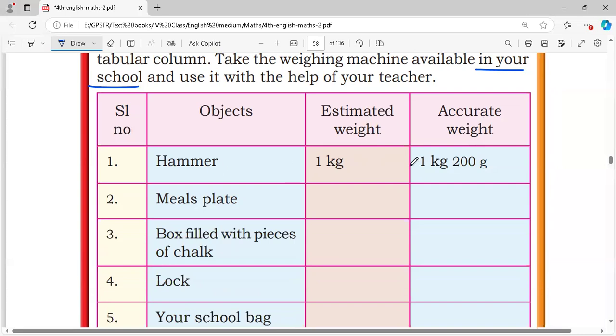Hammer, 1 kg. Accurate weight, estimated weight is 1 kg. Accurate weight is 1 kg 200 grams.